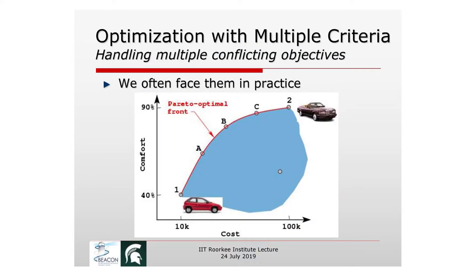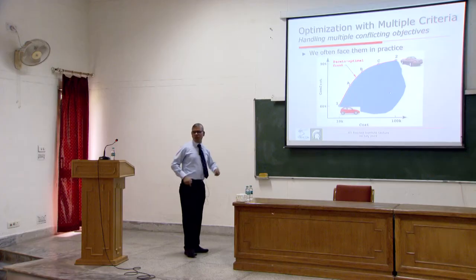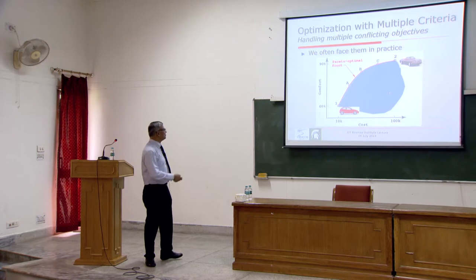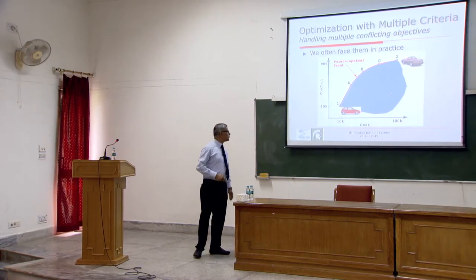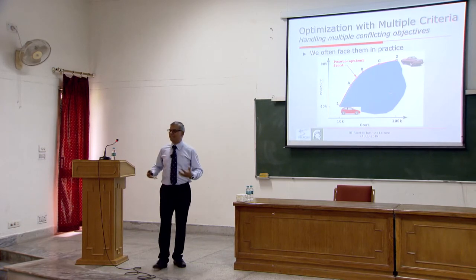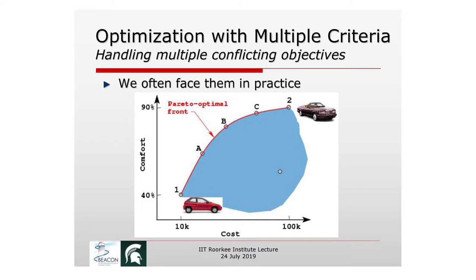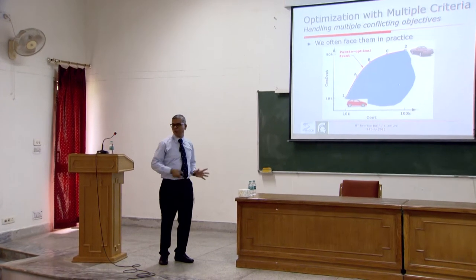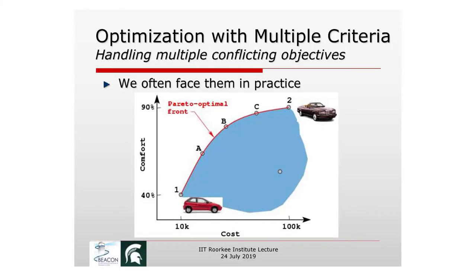Now let me talk about multiple criteria, since so far I've only discussed single-objective optimization. In multi-objective problems, you have more than one objective. For example, when buying a car: if you only consider price, you buy the cheapest. But if you want the most comfortable or safest car, it costs ten times more. This conflict gives rise to what is known as the Pareto optimal set — a set of solutions where no one solution dominates all others across all objectives.